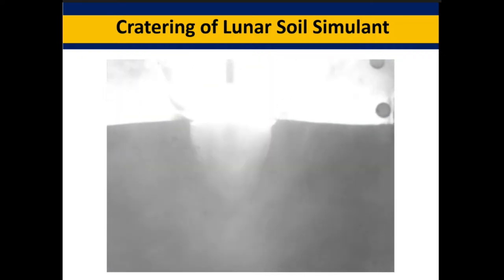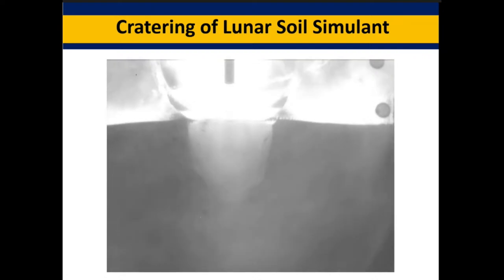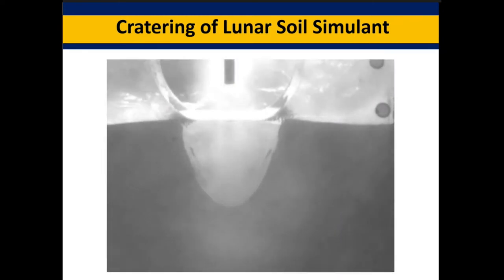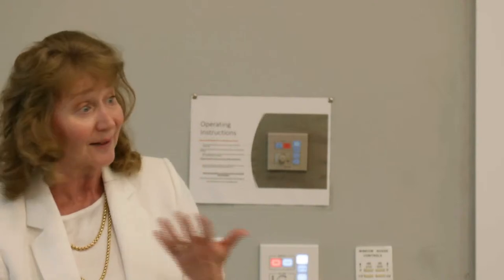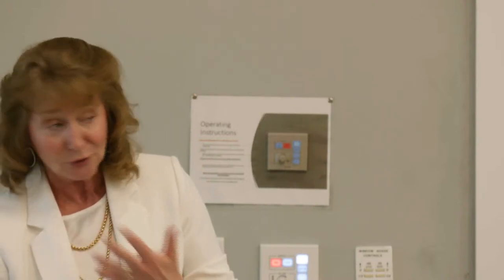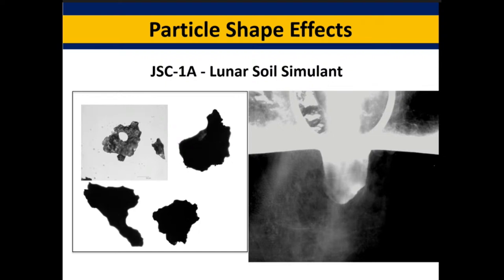These are a lunar soil simulant that we're cratering. The walls are very steep, and that's because the stress is associated with that particulate material, given that it's very jagged. This crater shape is completely different than in the rounded-shaped particle. The surface has a lot of asperities associated with it. The general bulk shape of the particle is not rounded in any way, and that's the kind of crater you get.